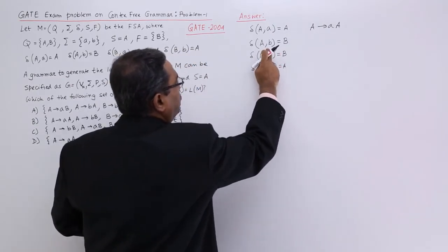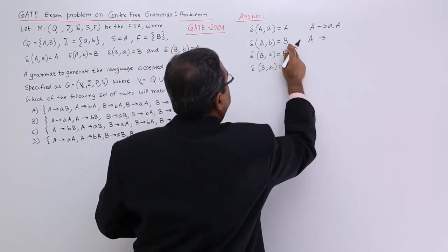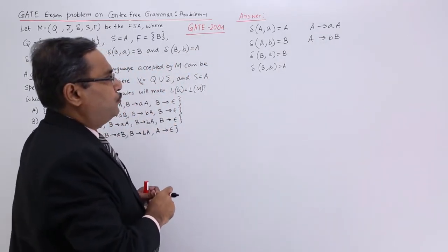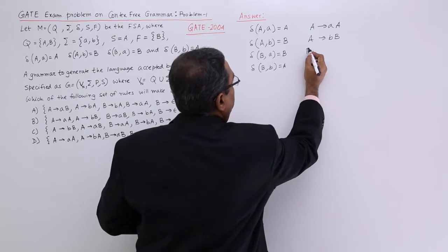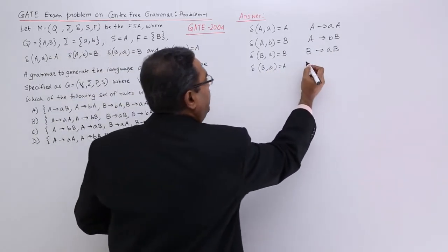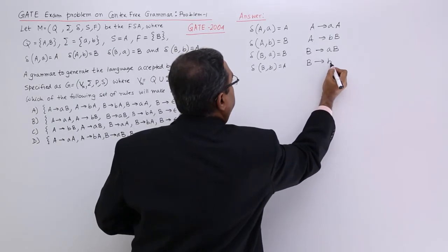From this one, what should I do? I should have this produces B B. A produces B B. From here B produces A B. From here B produces B A.